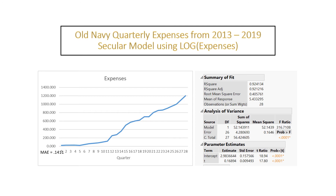Now let's look at a different set of data. Old Navy quarterly expenses from 2013 to 2019 produced a secular model that seems to have a curve in it — not huge, but there's a bit of one. So I'm going to try a log model and see how well that fits. When I work this out, R-squared is 0.924, and MAE is 0.1411. I had 28 time periods, and time is a good predictor. The equation is: log of expenses equals 2.98 plus 0.1689 times t.